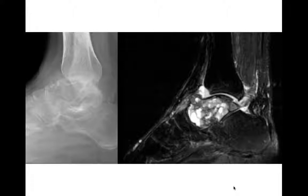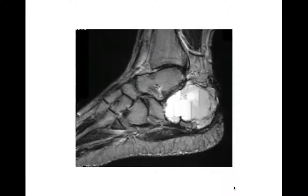For your differential diagnosis of fluid-fluid levels, giant cell tumor is on that list. Could this be an aneurysmal bone cyst? Sure — you can have ABC here too, so you may be stuck between those two differentials. This one turned out to be a giant cell tumor. Remember: your differential for fluid-fluid levels on MR includes giant cell tumors, aneurysmal bone cysts, chondroblastomas, and telangiectatic osteosarcoma. This is another example of a giant cell tumor occurring in the posterior calcaneus.